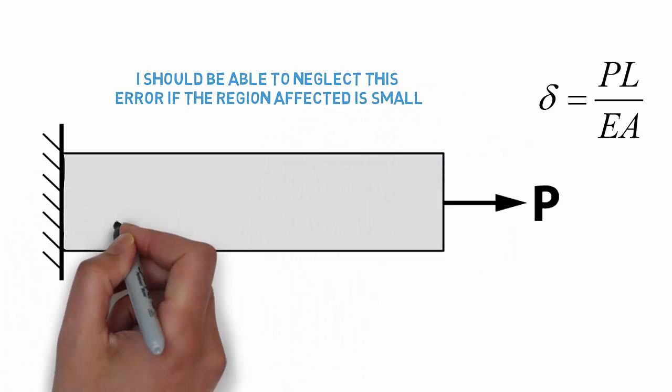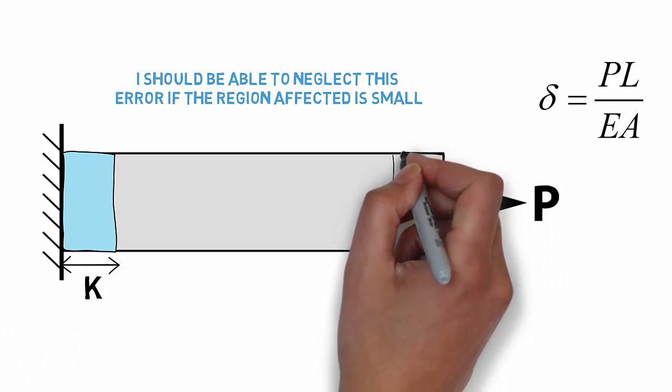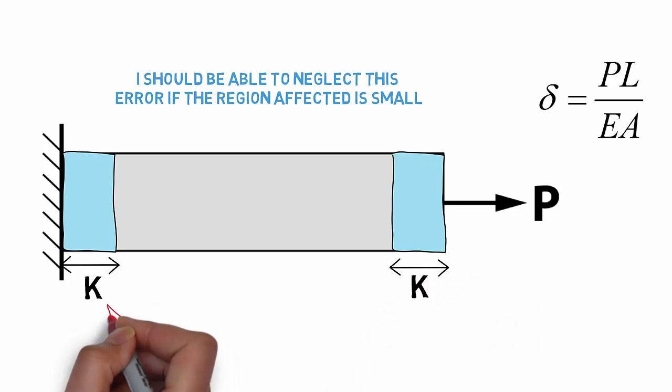In the problem shown here, we can highlight a length of the beam influenced by each of the two boundary conditions, and denote the length of these regions as k. The question becomes, how big is k?